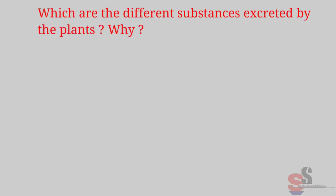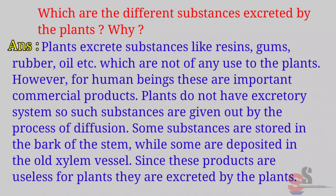However, chemosynthetic microbes are not plants — they are placed in another kingdom. Let's Recall, Textbook page 27: Which are the different substances excreted by the plants and why? Answer: Plants excrete substances like resins, gums, rubber, oil, etc., which are not of any use to the plants. However, for human beings, these are important commercial products. Plants do not have an excretory system, so such substances are given out by the process of diffusion. Some are stored in the bark of the stem, while some are deposited in the old xylem vessels.